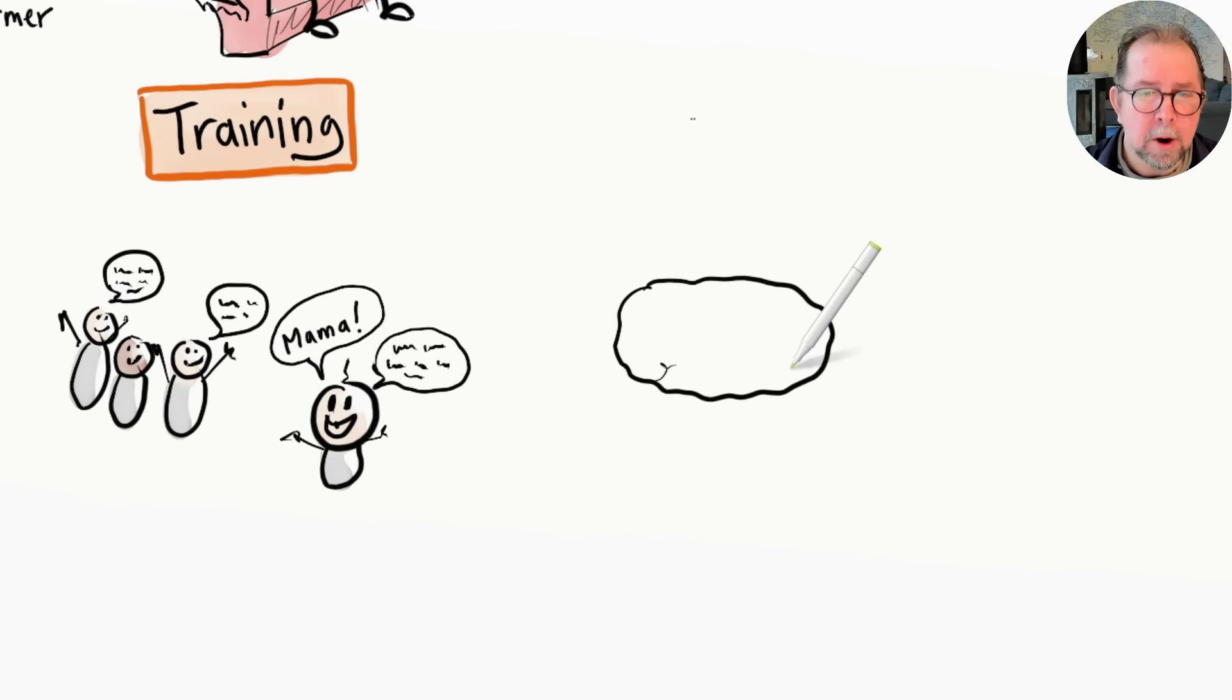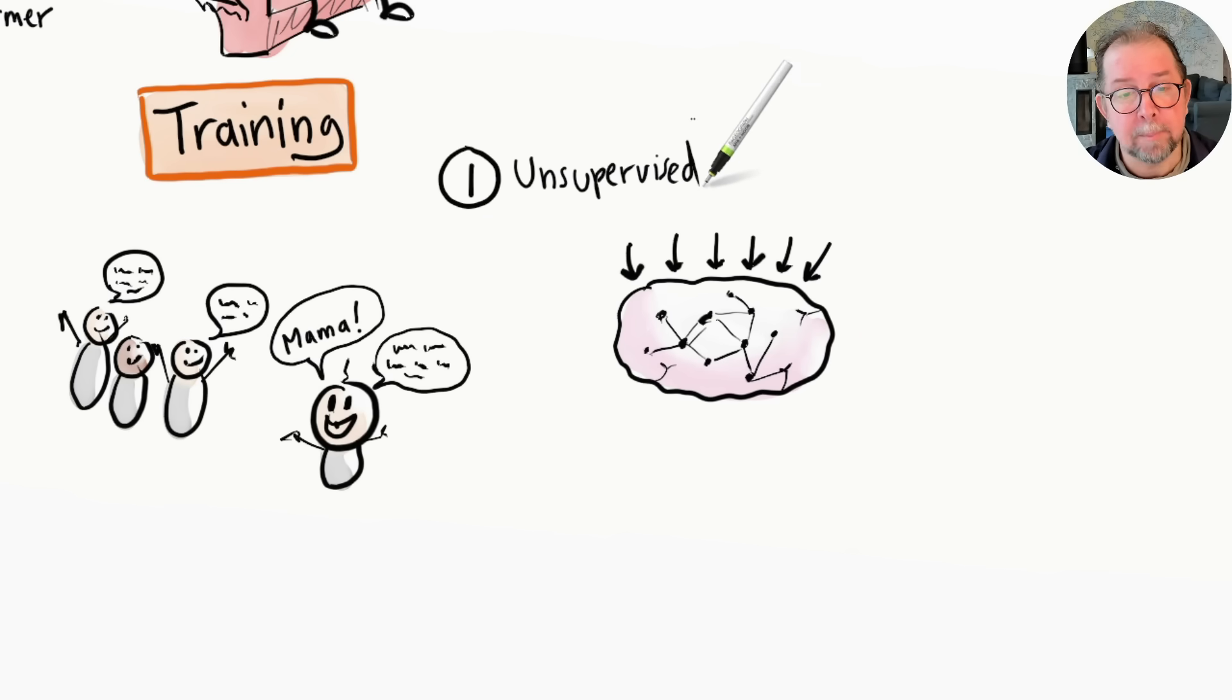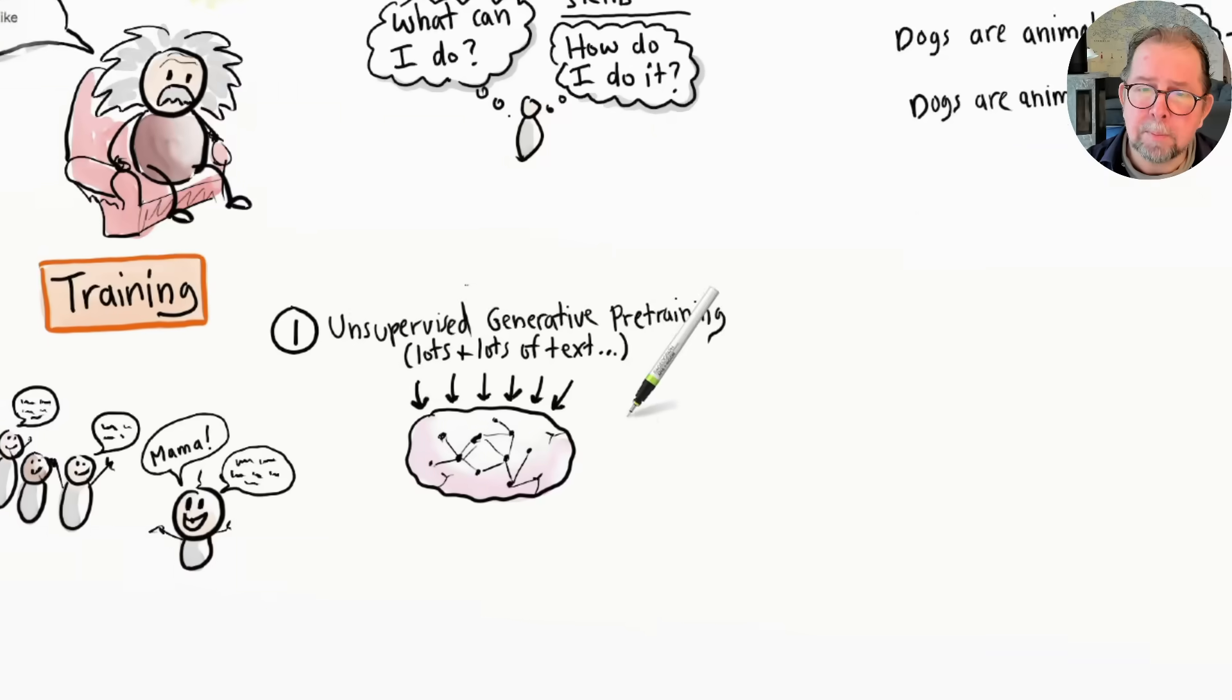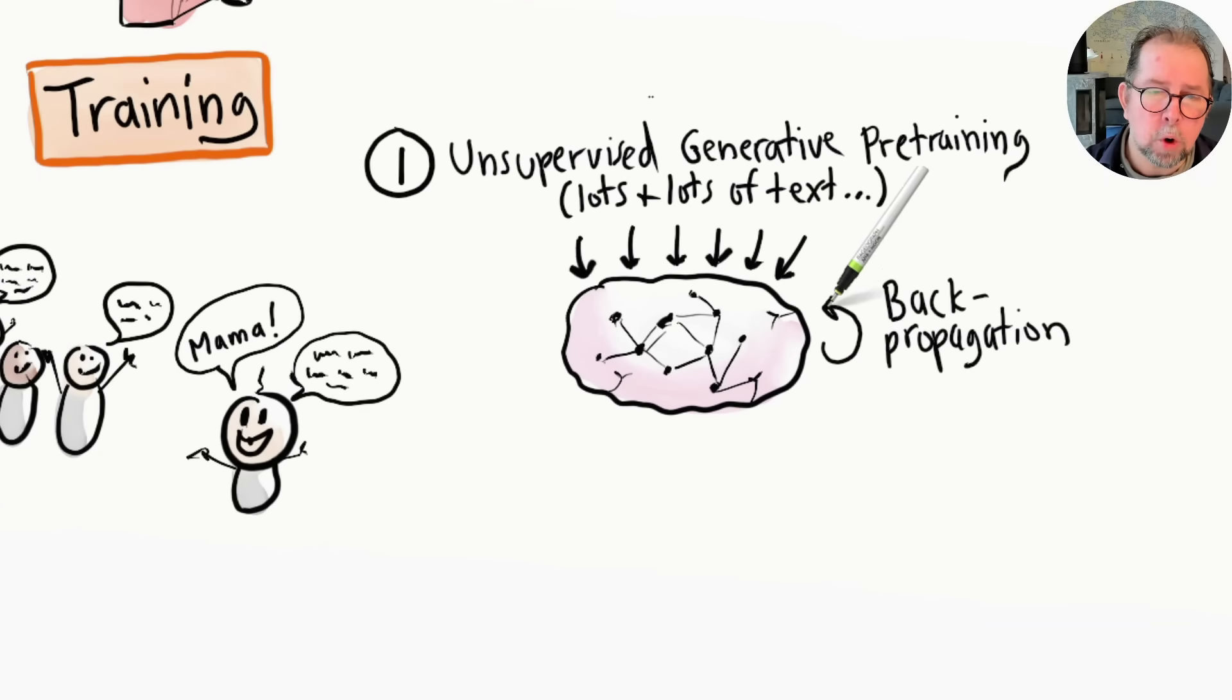Similarly, during a training period, the language model is fed a mind-boggling amount of text to learn from, mostly from internet sources. It then plays guess-the-next-word with all of this over and over again, and the parameters are automatically tweaked until it starts getting really good at predicting the next word. This is called back propagation, which is a fancy term for 'oh, I guessed wrong, I better change something.'